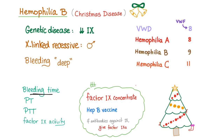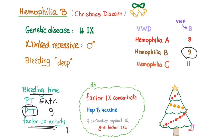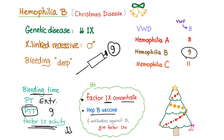How to test for hemophilia B? Bleeding time is normal because it measures platelets, and platelet function is normal here. PT is normal because the extrinsic pathway is intact. Factor 9 is in the intrinsic pathway, so PTT will be prolonged, and factor 9 activity will be decreased. Treatment: give factor 9 concentrate. Thankfully today we can give the patient a single factor. Also give the hepatitis B vaccine, because this patient will have many blood transfusions and injections, increasing the risk of hepatitis B.